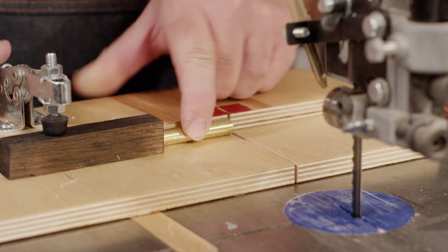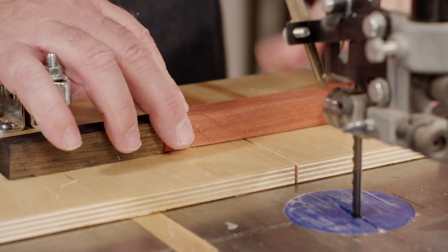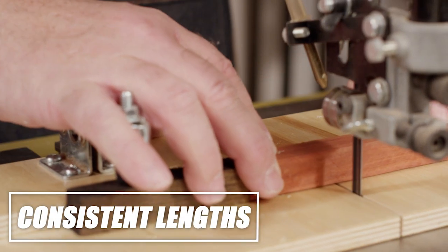For instance, our shop-built band saw sled moves a blank into the blade at a perfect right angle. The stop allows us to cut every blank to the exact same length.